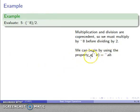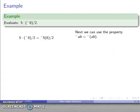...that the negative can attach to either factor. The negative attached to the 8, I can move to the 5. Using the property -ab = -(ab), I get -(5·8)/2. Doing the multiplication inside the parentheses first gives -(40)/2.